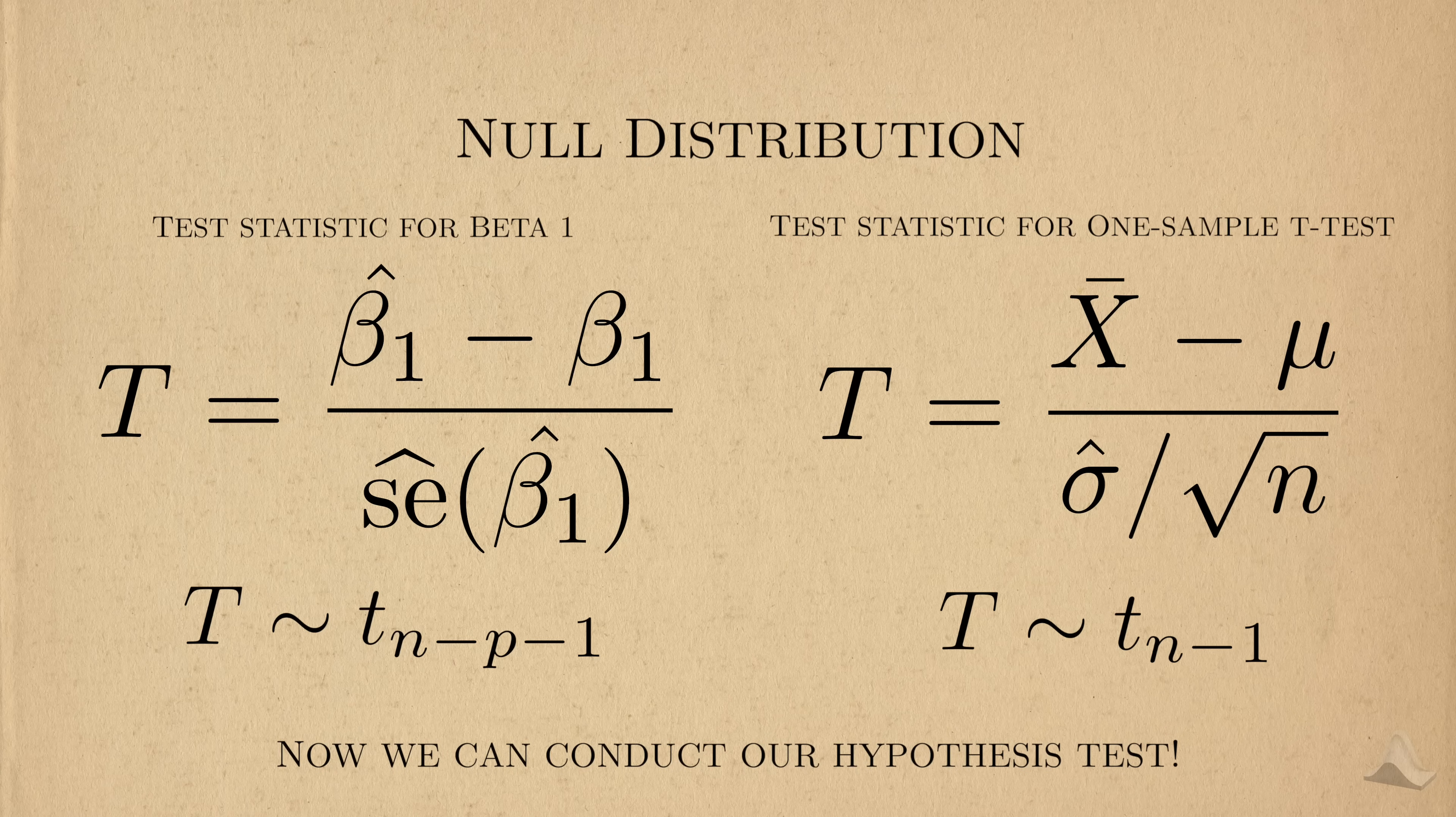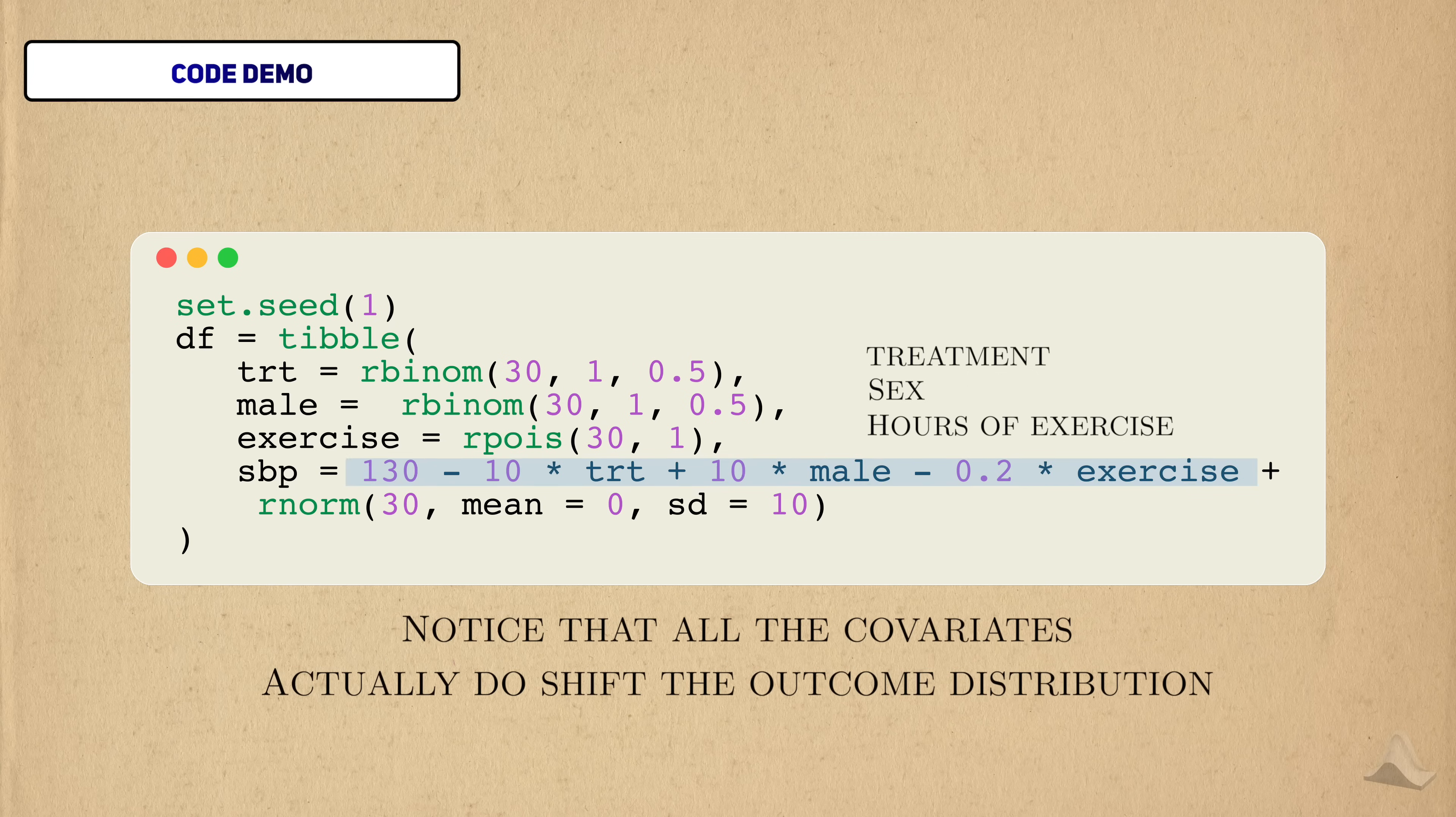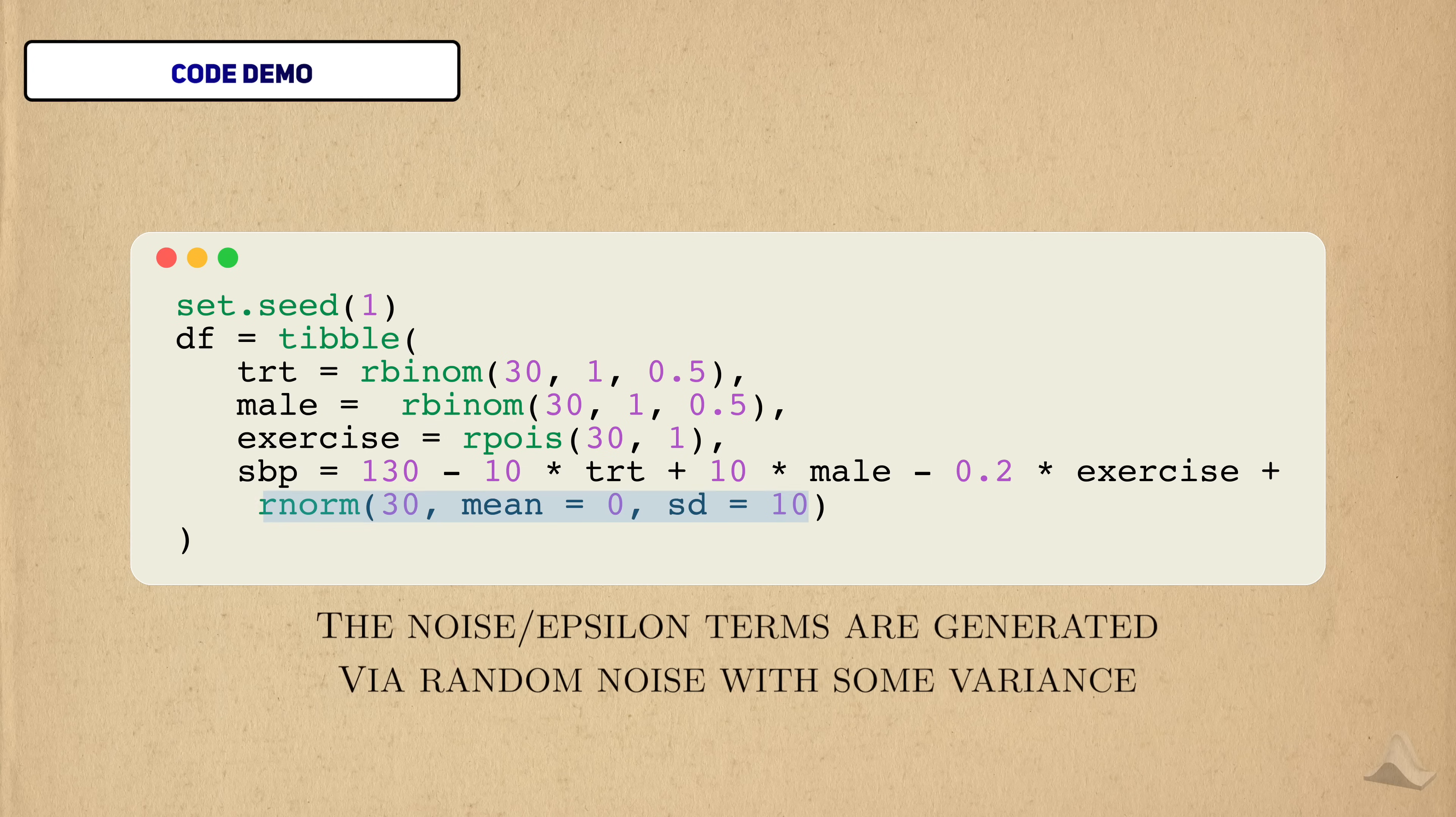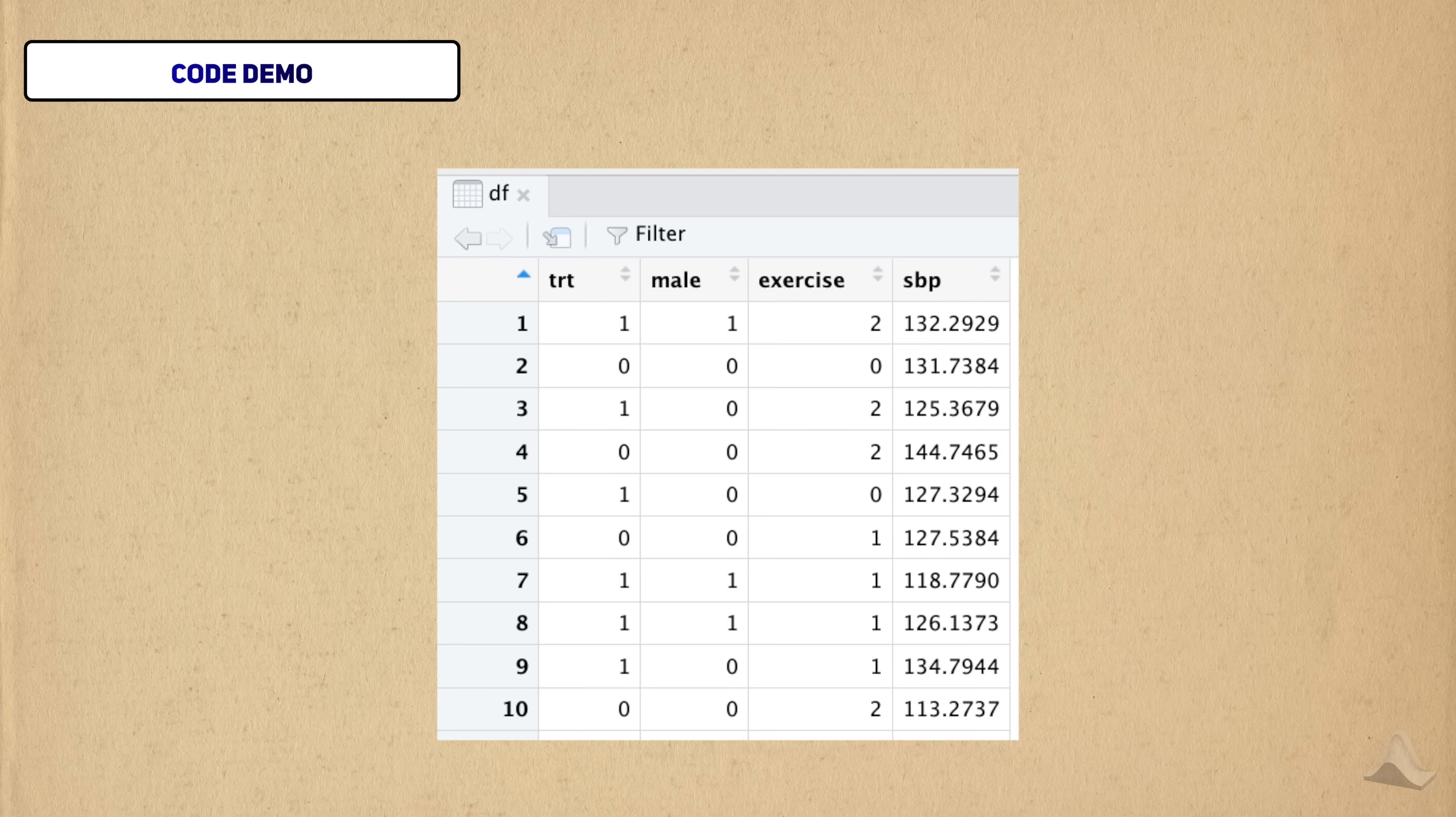Let's see how we can do that in code. I've simulated a multiple linear regression with three terms. Treatment, sex, and hours of exercise. You can see that all three covariates actually do shift the average outcome, but the specific values here aren't that important. To simulate the epsilon terms, I generate a random normal with the standard deviation of 10. Again, the value is not so important here. If we look at the data, it'll look just like a data set we might use in a real-world analysis.